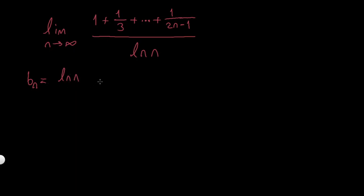so this satisfies our conditions for the Stolz-Cesàro theorem and an is the top thing, so it's just 1 over 3 plus ... plus 1 over 2n minus 1 and I know that if this limit exists...